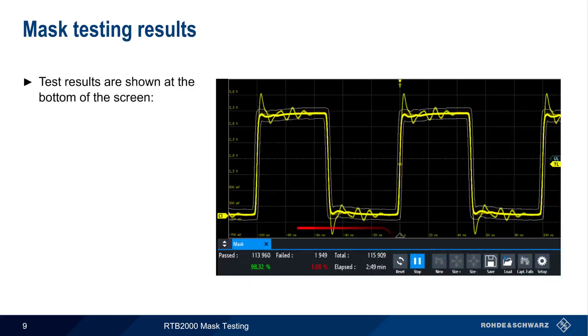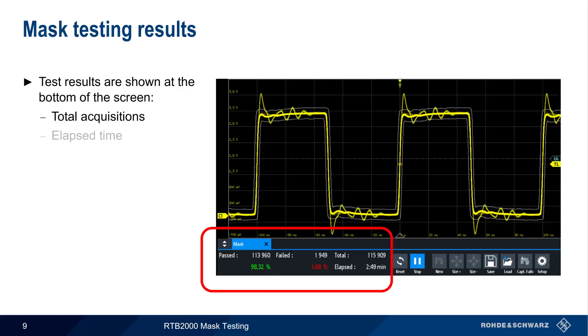Mask test results are shown at the bottom of the screen. These include the absolute number of acquisitions and the elapsed time, as well as counts and percentages for both passed acquisitions and failed acquisitions. Recall that the Reset button can be used to clear and restart the statistics during a run.